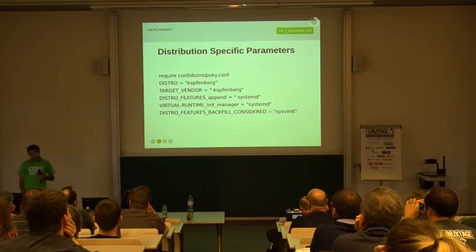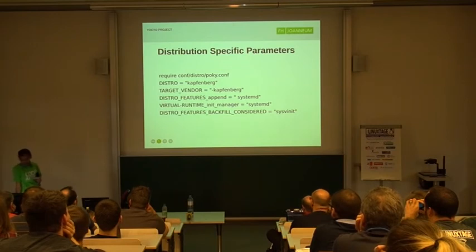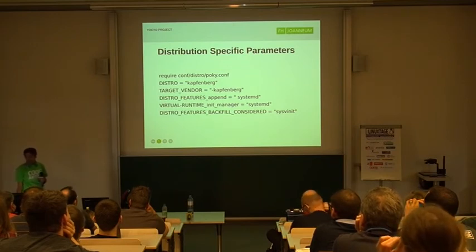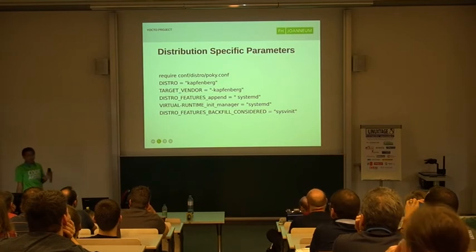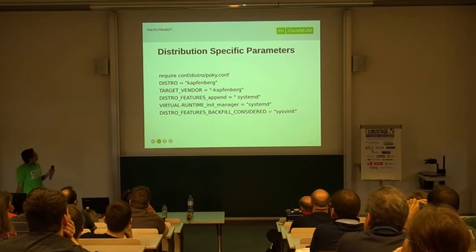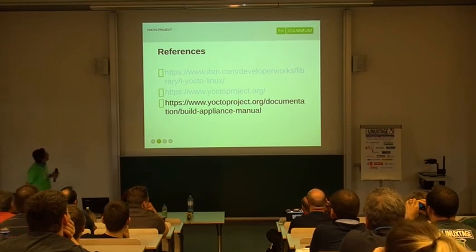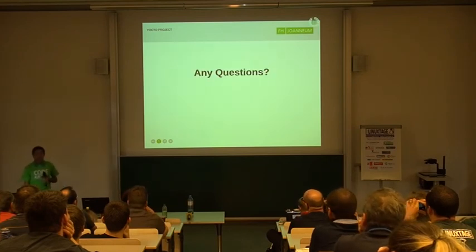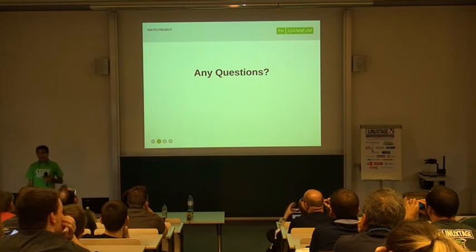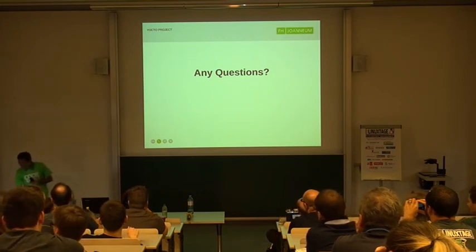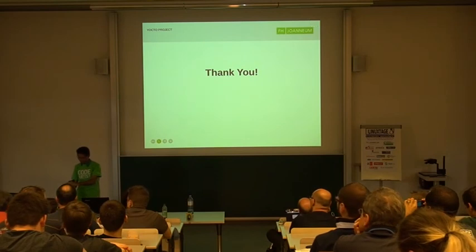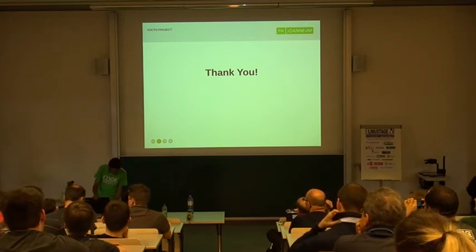This is how a distribution snippet looks. I call this one Kartenberg. Here you use a virtual manager — suppose if I have systemd or sysvinit, if I don't want sysvinit, then I enable systemd. Here are the references — you can get them from here. Any questions? I assume it was successful. Thank you.